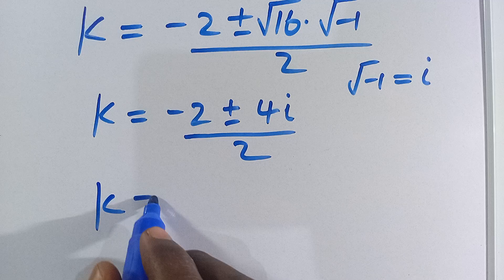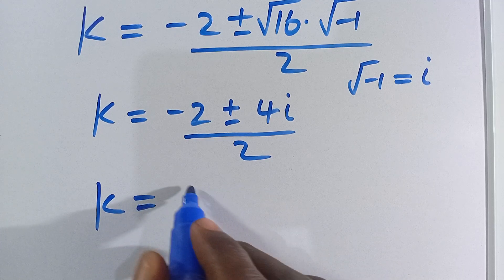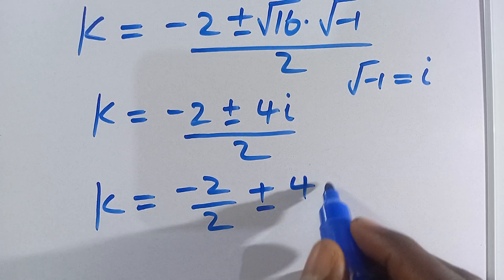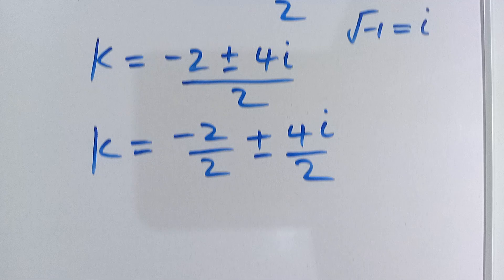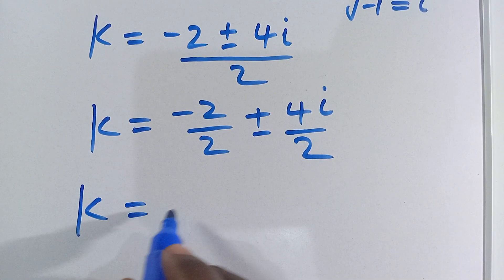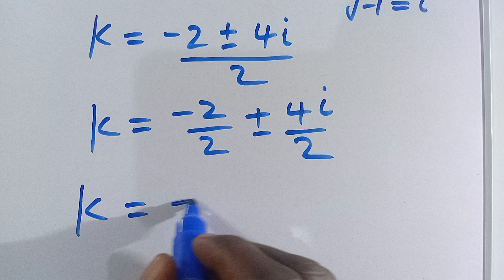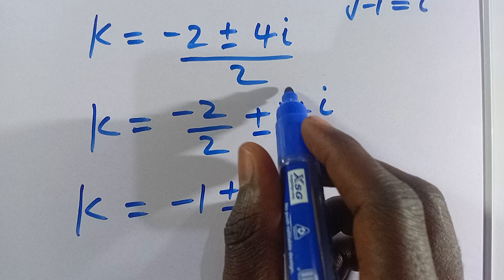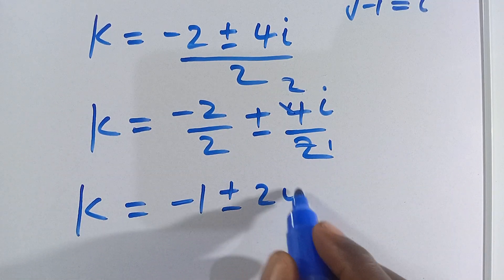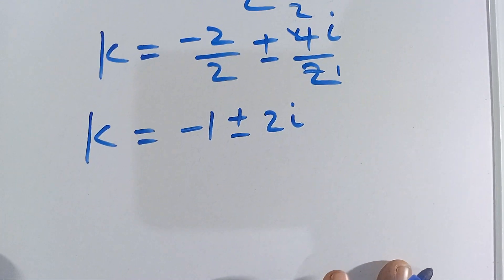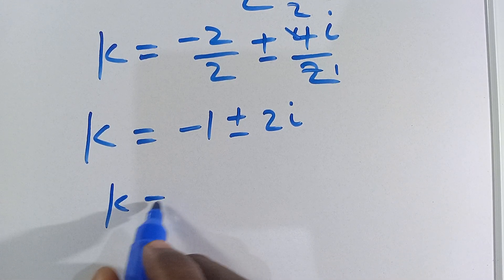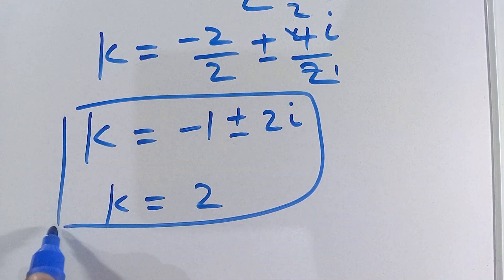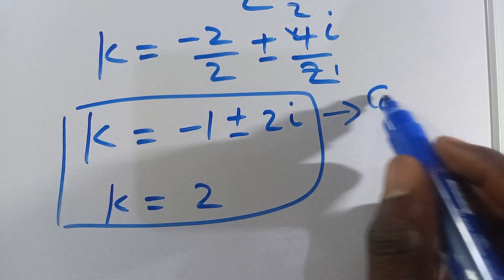Distributing, we have negative 2 divided by 2, plus or minus 4i divided by 2. So k equals negative 1 plus or minus 2i. Finally, our solutions are k equals 2, and the complex solutions k equals negative 1 plus 2i and k equals negative 1 minus 2i.